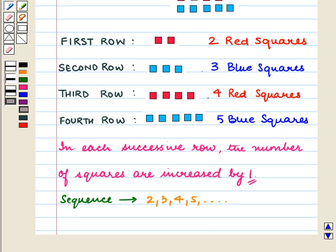we observe that the color of squares in each row is also forming a particular pattern. In the first row, we have red squares. In the second row, we have blue squares. Again in the third row, we have red squares, and then again, we have blue squares.